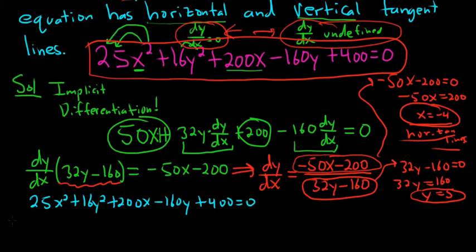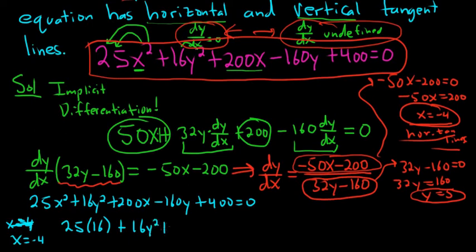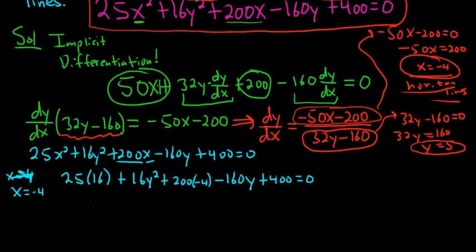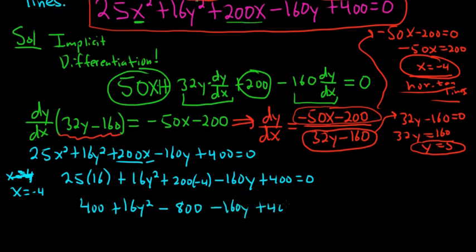Let's do the horizontal ones first. When x equals negative 4, we plug it into the equation. We get 25 times 16 — negative 4 squared — plus 16y² plus 200 times negative 4, minus 160y, plus 400, all equal to 0. That gives 400 plus 16y² minus 800 minus 160y plus 400 equals 0.